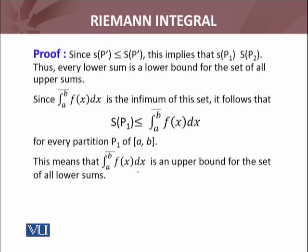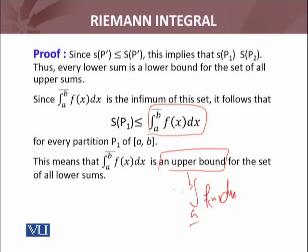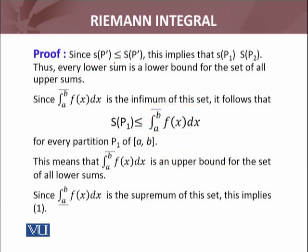This means that the upper integral is an upper bound. Now, vice versa, for my set of lower sums, this means that the upper integral is a bound of all the lower sums—and what kind of bound is this? An upper bound. Now, what is the lower integral? We defined the lower integral as the supremum of the set of lower sums. What is supremum? Greatest lower bound.